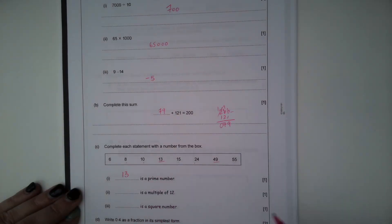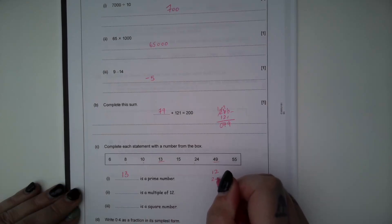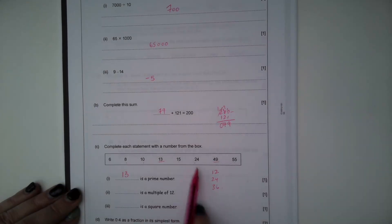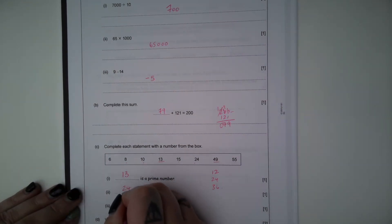13 is not a multiple of 12, 15 is not a multiple of 12. But if we think about our 12 times tables, 24 is the second multiple of 12. So multiple is your times tables.